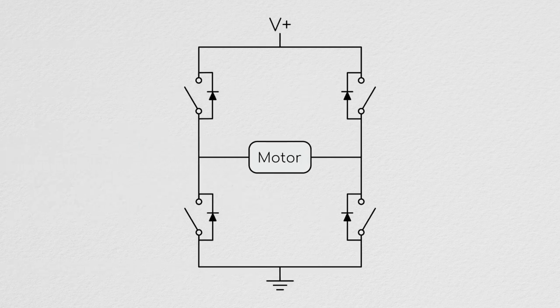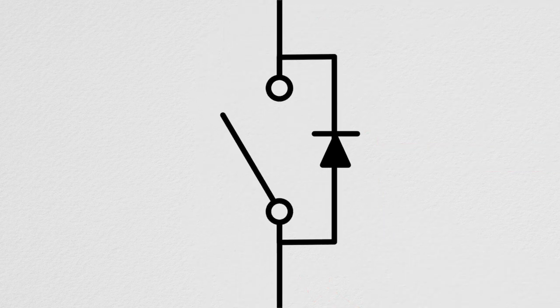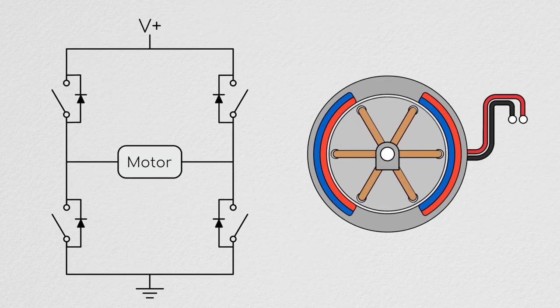If you remember from earlier, the H-Bridge is an electric circuit that connects a load to both a positive voltage and ground via several MOSFETs, which we model as the combination of a switch and a diode. This works great for our brushed motors, which only have two wires coming out of them.